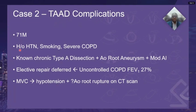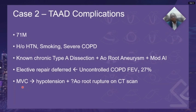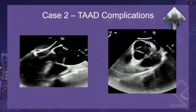The second case is a 71-year-old male with a history of smoking, severe COPD, and a known type A chronic aortic dissection with a root aneurysm and moderate aortic incompetence. His elective repair was deferred because of severe uncontrolled COPD with an FEV1 of about 27%, thought to be preclusive to repair. Unfortunately, this patient was involved in a motor vehicle collision, developed hypotension, and on presentation to the emergency room, CT scan showed rupture of the aortic root.